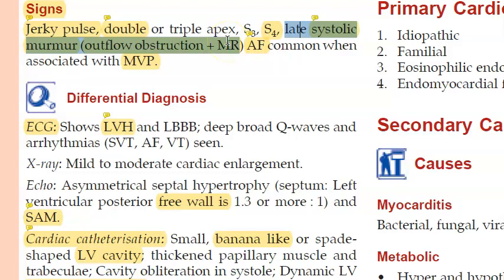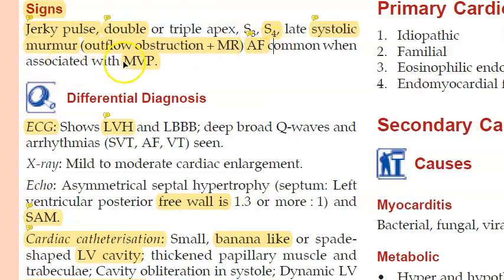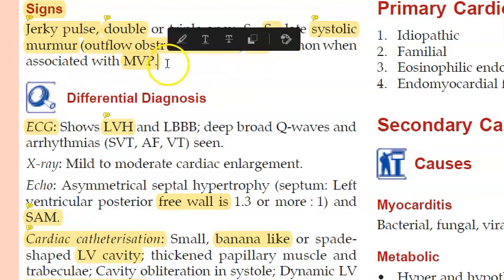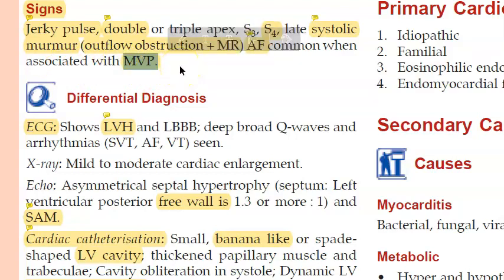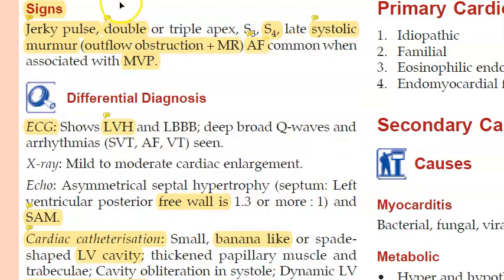There can also be a murmur due to mitral regurgitation. Mitral valve prolapse can occur because of the stress on the mitral valve. Atrial fibrillation can develop because the atria are also affected.